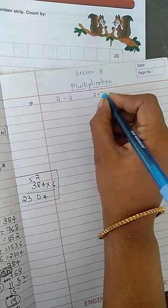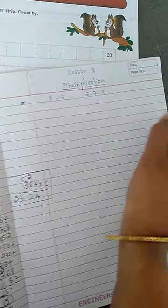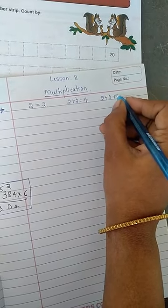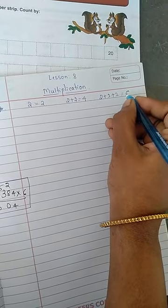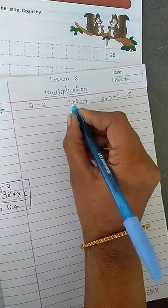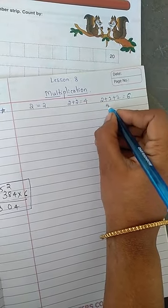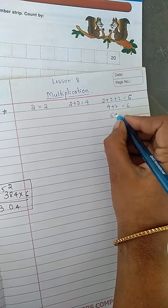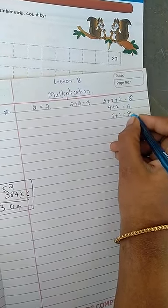If you are adding 2 times, 2 plus 2 is 4. If you are adding 2 three times, 2 plus 2 plus 2 you will get answer 6. Or else 2 plus 2 is 4, 4 plus 2 is 6. Again for this 6 if you add again plus 2 you will get 8.